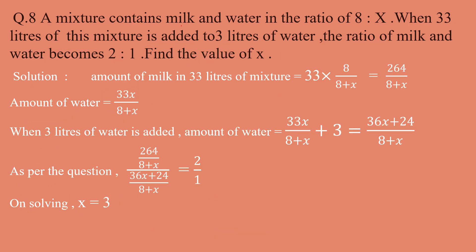Next question: A mixture contains milk and water in the ratio of 8:x, where 8 is milk and x is water. When 33 liters of this mixture is added to 3 liters of water, the new ratio of milk to water becomes 2:1. You have to calculate the value of x.